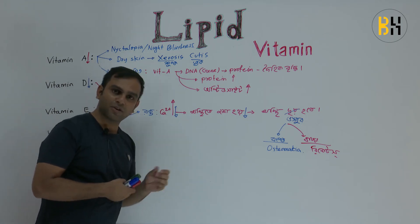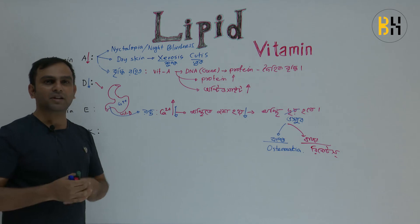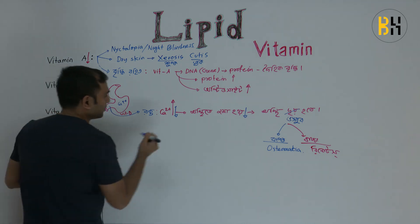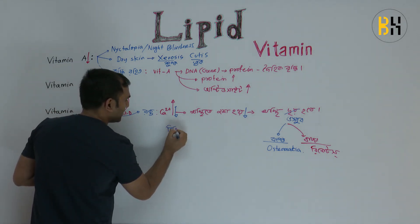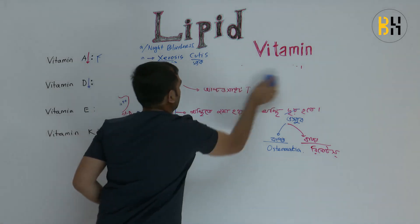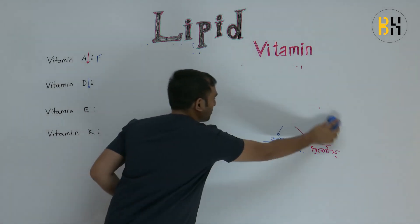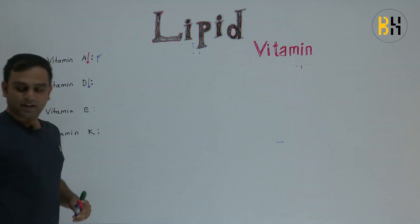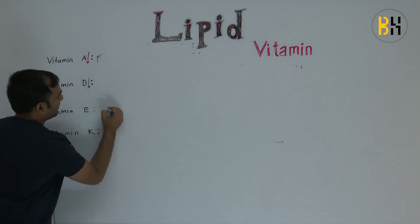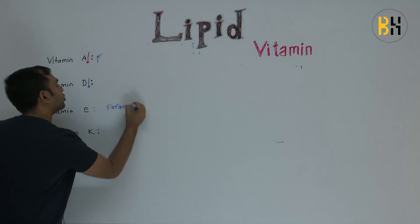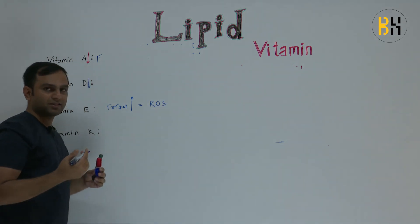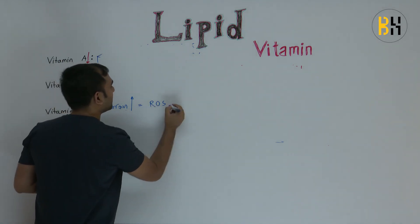So now vitamin E — what lives in your diet? In the same way we encounter reactive oxygen species, free radicals, and reactive oxygen species. We got these things.